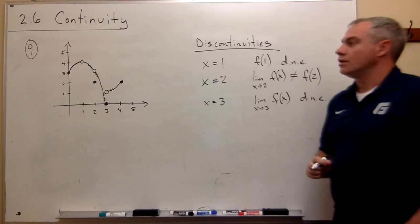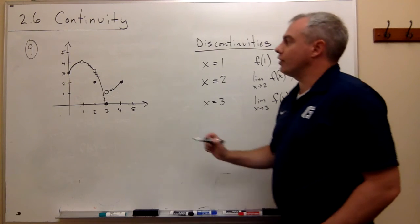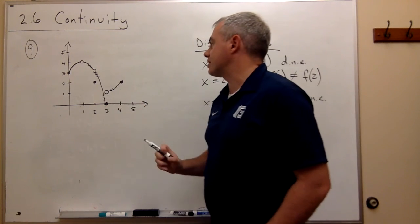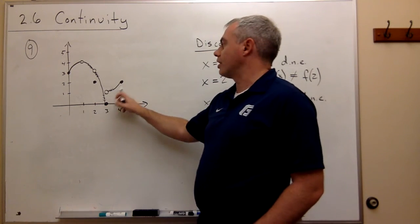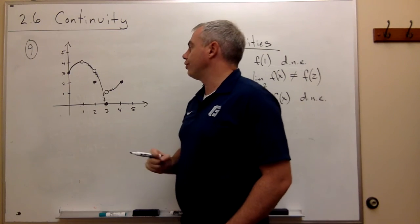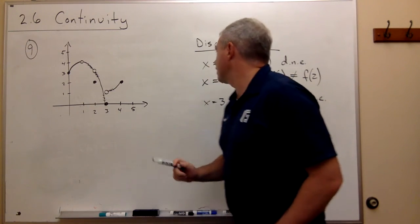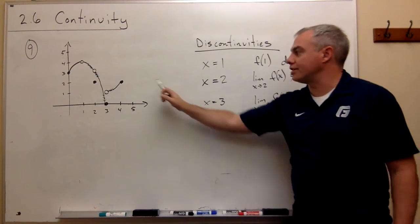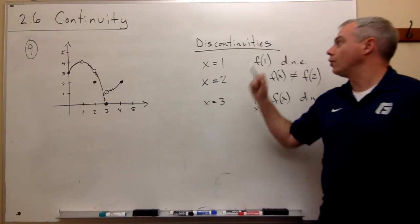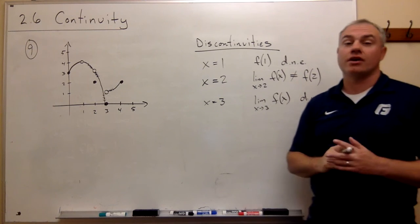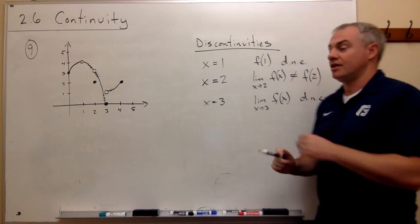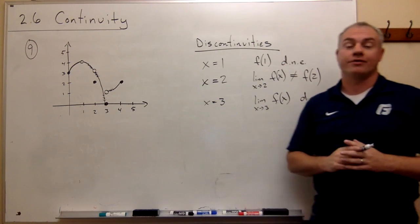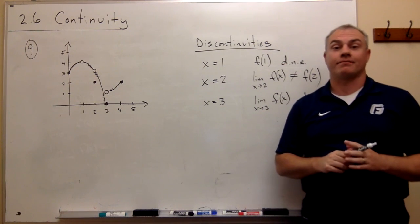Everywhere else there's nothing suspicious going on — it's nice and smooth. So these are the three points on this graph where there are discontinuities, and those are the three reasons why.